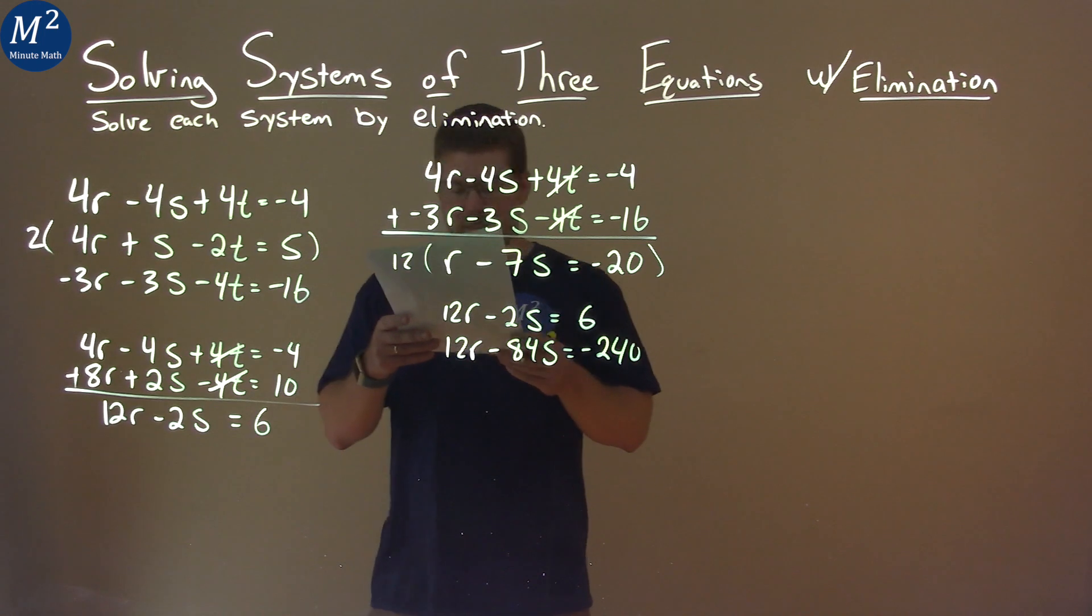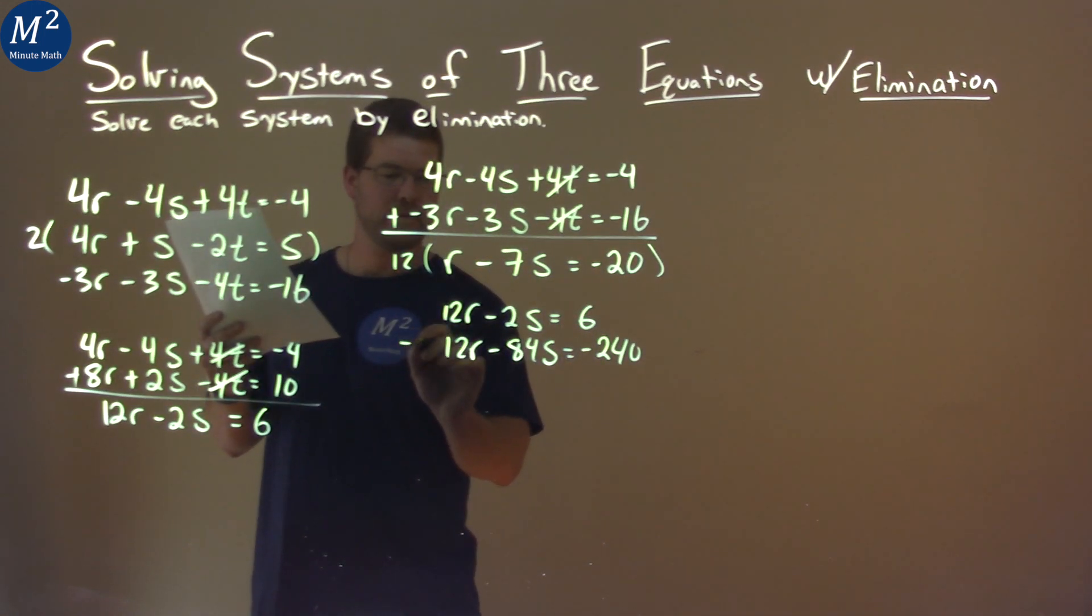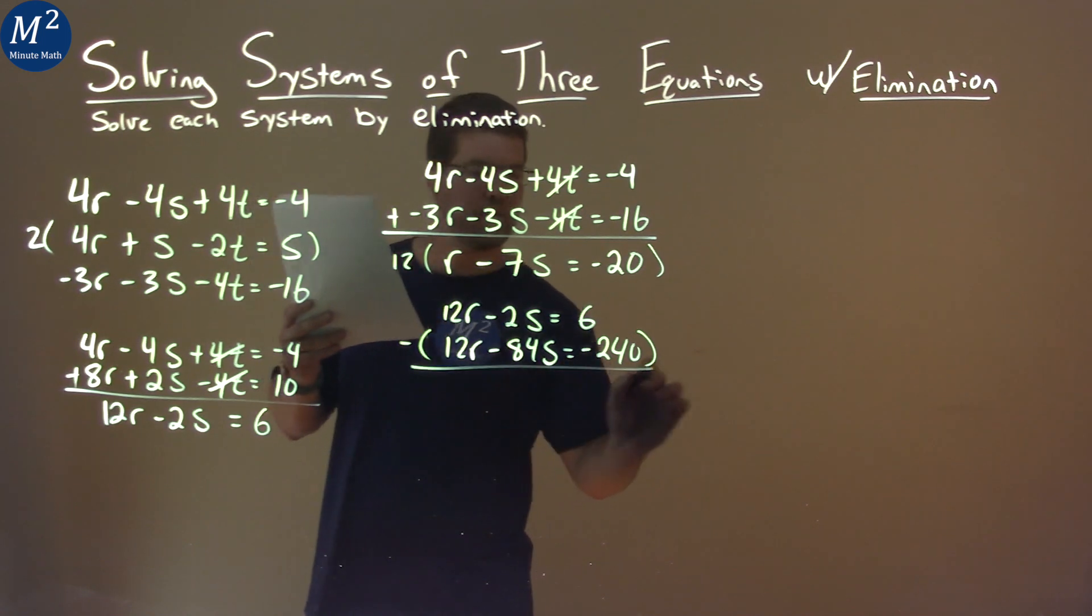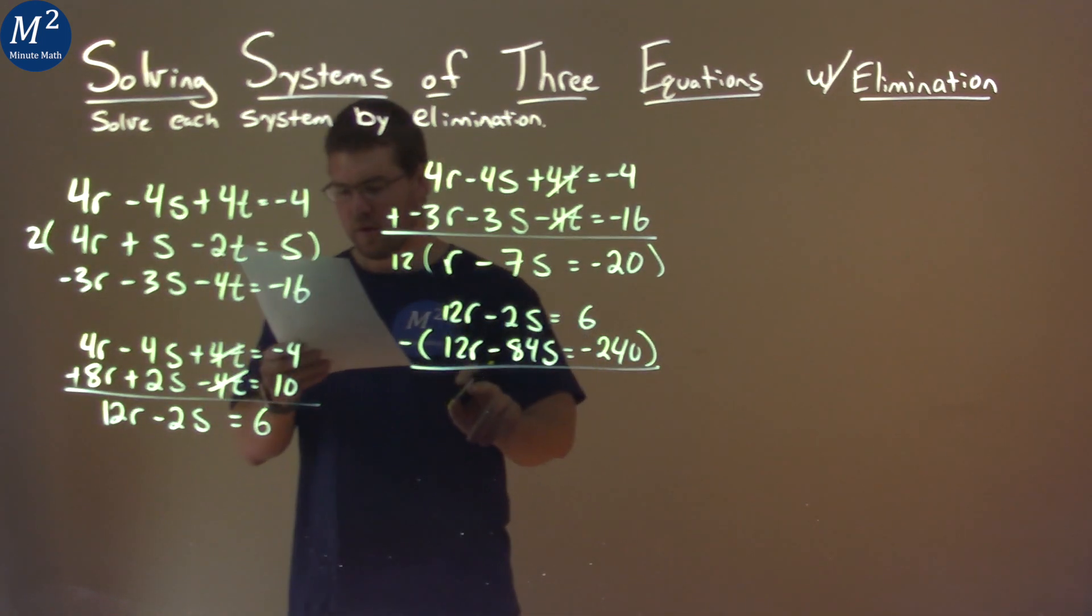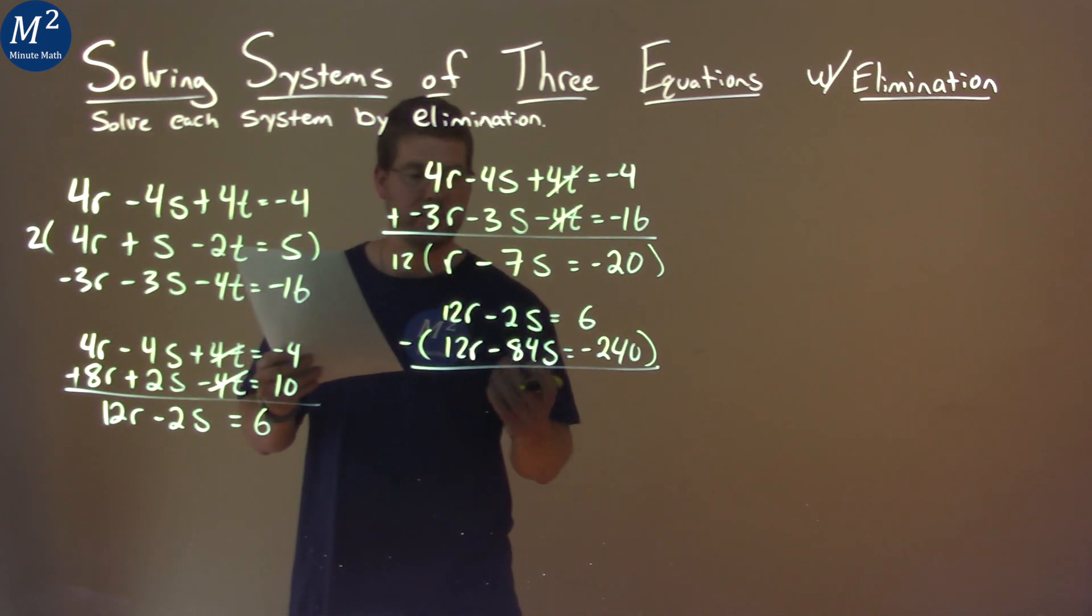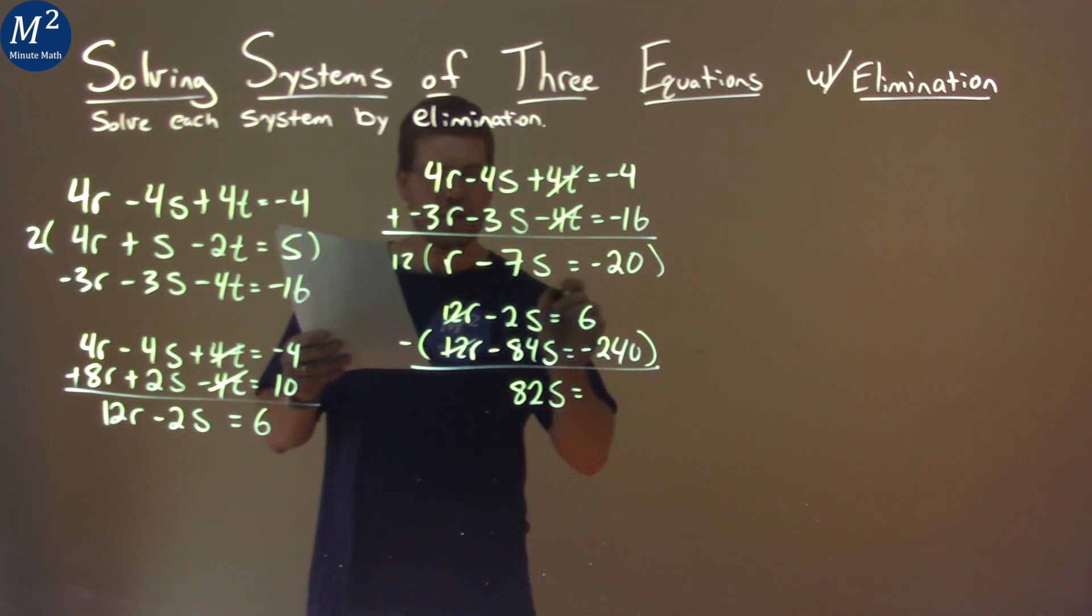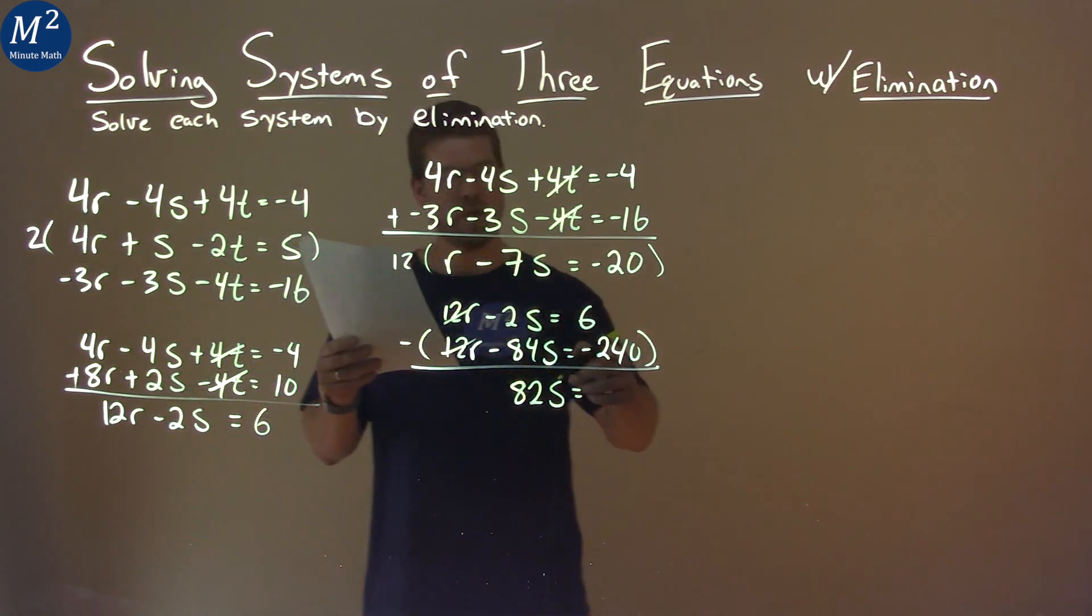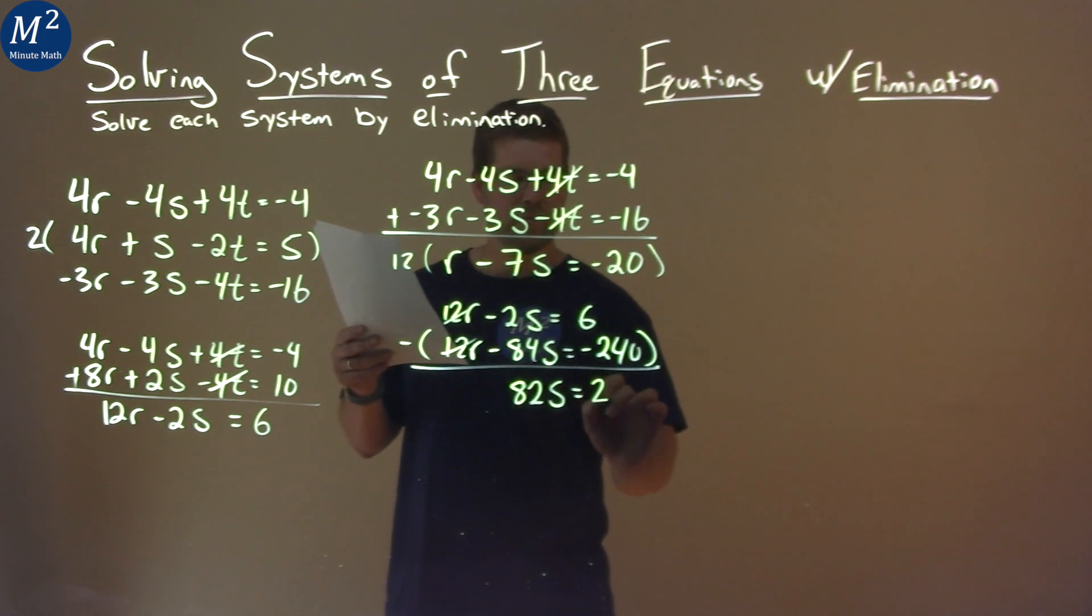If we subtract the two equations, so here I'm gonna subtract them like this. Make sure we distribute the minus sign here. 12r minus 12r is 0. Fantastic. They cancel. Negative 2s minus negative 84s is positive 82s. 6 minus negative 240 is like adding 240, so we have 246.